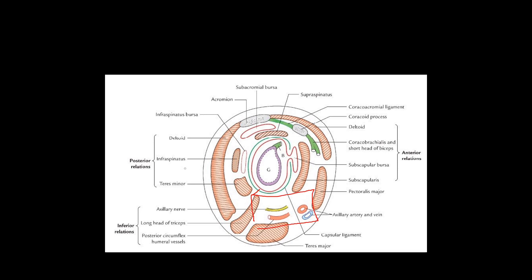Inferiorly, the subscapular bursa is present. Looking at the inferior relation, there is the quadrangular space, the upper triangular space, and the lower triangular space. The posterior circumflex humeral vessels pass through the quadrangular space along with the axillary nerve. The axillary artery and axillary vein can also be mentioned here.